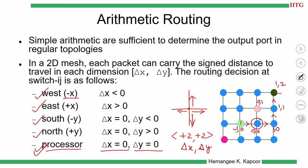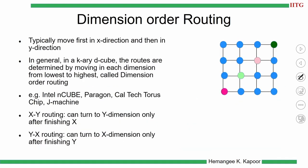This type of routing — where the path goes in one direction first and then the other — following the x direction first and then the y direction, is called dimension order routing. You can also try the same for the pink node pairs as a quick exercise.